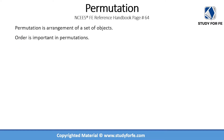Permutation. What is permutation? Permutation is an arrangement of a set of objects in which order is important. This is the key difference between permutation and combination. Let me give you an example. Let's say you are given A, B, C.